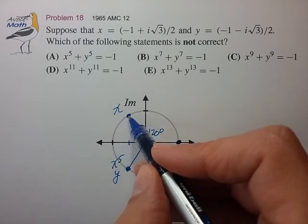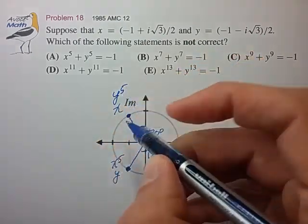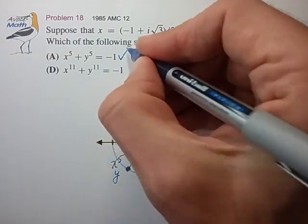y to the first. y to the second. y to the third. y to the fourth. y to the fifth. Lands us here. Those two numbers will again add to -1. So this relationship is correct.